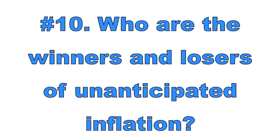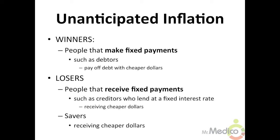Number 10: Who are the winners and losers of unanticipated inflation? When inflation occurs unexpectedly, some people will benefit and some will not. People that make fixed payments, such as debtors, gain from sudden inflation because they pay off their debt with cheaper dollars. People that earn fixed income will not benefit from unanticipated inflation.